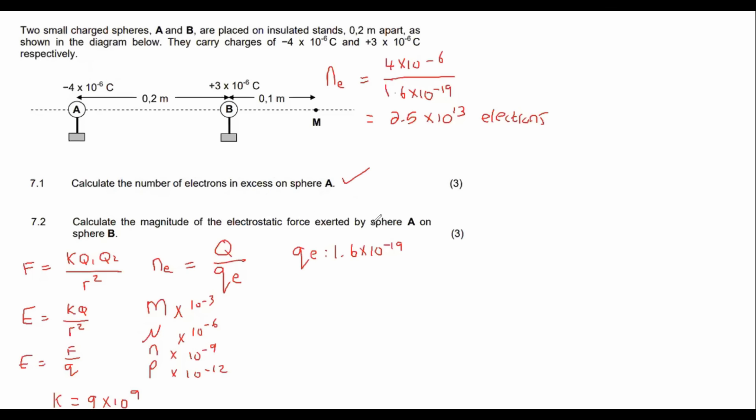Then it says calculate the magnitude of the electrostatic force exerted by sphere A on sphere B. Now, some students read that and they're like, okay, sphere A on sphere B. How do I do that? Is it guys, it doesn't matter if they say A on B or B on A, because it's actually the same thing. According to my good old friend, Newton, Newton's third law says that when an object exerts a force on another object, then that object will exert the same force back. So A on B is the same as B on A. They're just trying to mess with your head over here. It's the same thing.